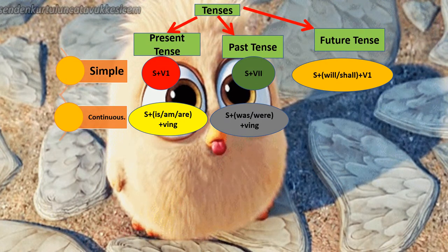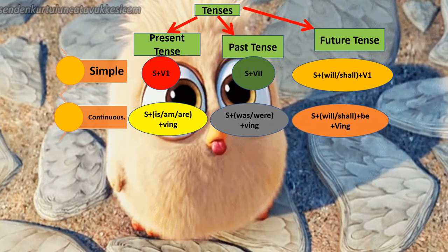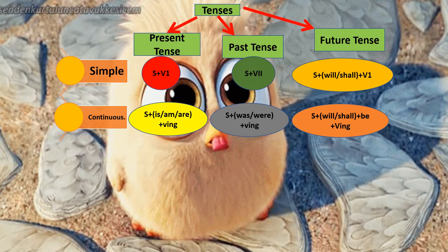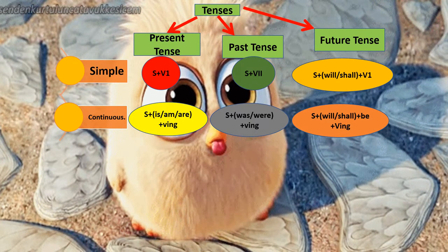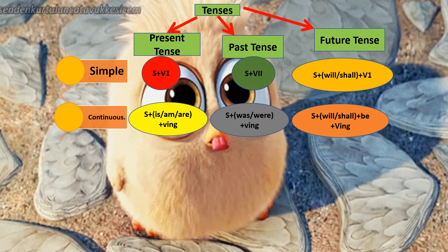Let us move to future continuous tense. Whenever future comes, we use will/shall. There is an addition — 'be' is also included, plus V-ING for continuity. Formula: subject + will/shall + be + V-ING. For example: 'she will be cooking', 'he will be cooking', or 'I shall be cooking'.